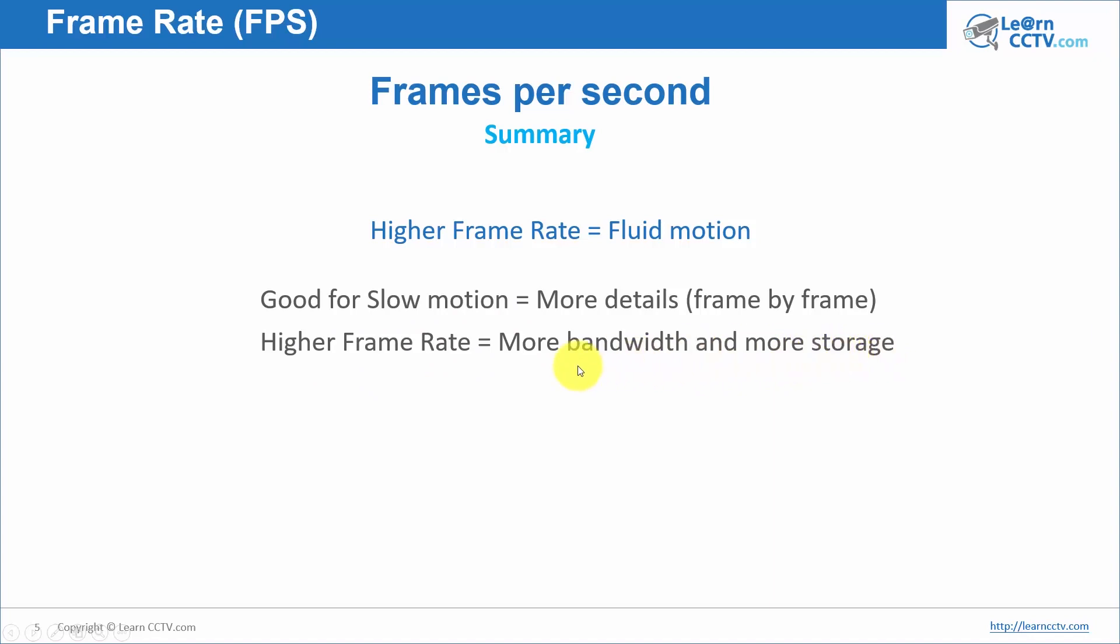There are calculators for this. You can have calculators from camera manufacturers that you can calculate how much bandwidth you're gonna need, and how much storage you're gonna need for your camera, based on the frame rate you're using, resolution, and something more. Usually, 15 frames per second is enough for most of the CCTV design, CCTV projects.